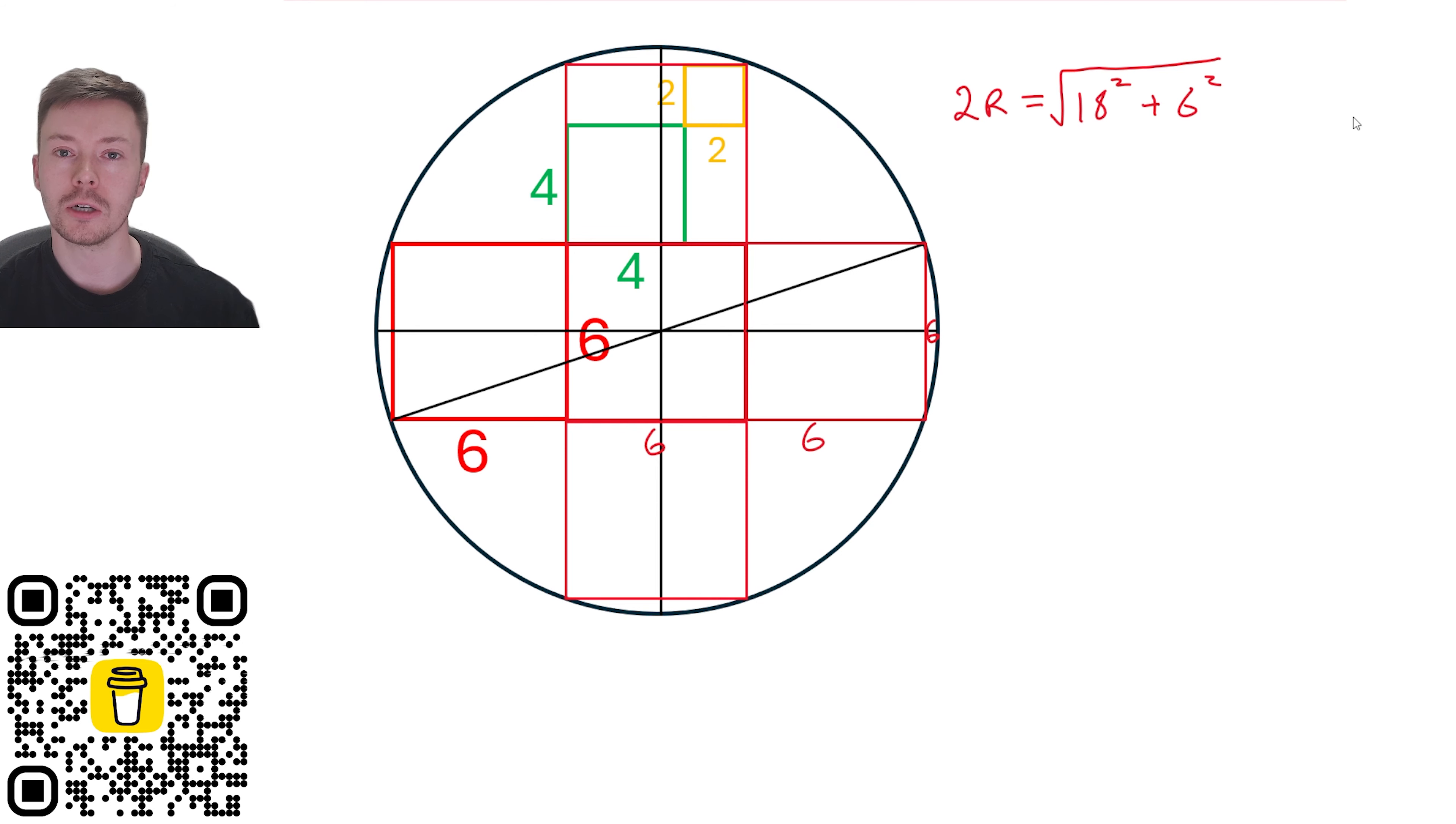So, 2R is equal to the square root of 18 squared plus 6 squared. That gives us 2R is equal to 6 root 10, and therefore, R is equal to 3 root 10.